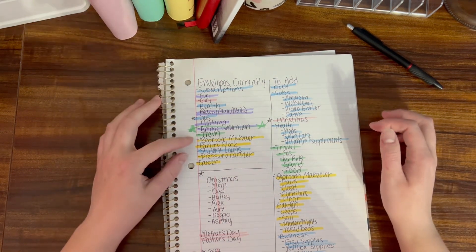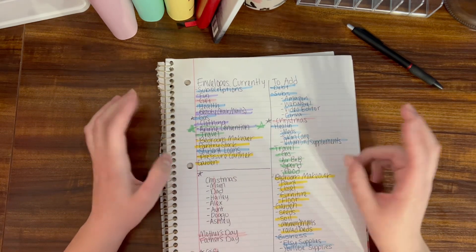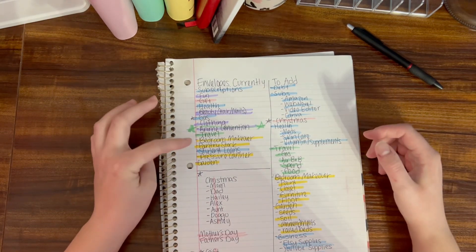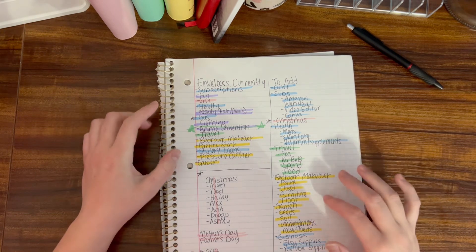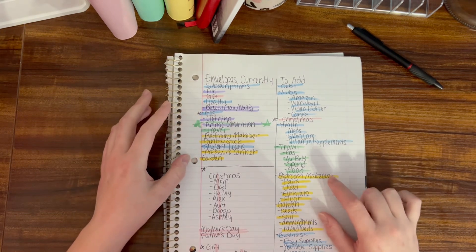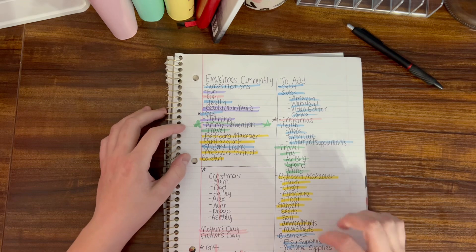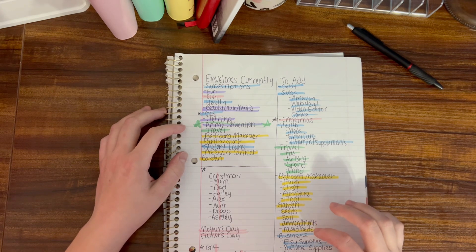For the yellow binder that I'll get, I'll have my home stuff. I'll have bedroom makeover, pantry stock, and garden. I'll divide bedroom makeover into paint, closet, furniture, and floor, and then garden into seeds, soil amendments, and raised beds.